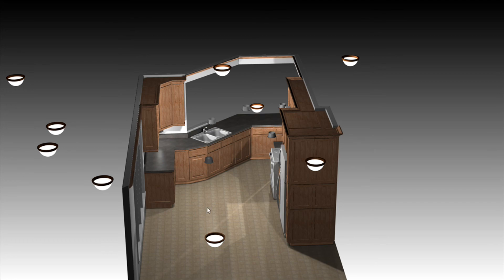Now before I get too carried away with applying lighting effects and everything in the room, one thing that you need to make sure you do is have some sort of sheen on everything in the room — your appliances, your countertop, your cabinets, your walls, and your floor. Without some sort of sheen, even if it's nothing but a one, you're not going to get good results.